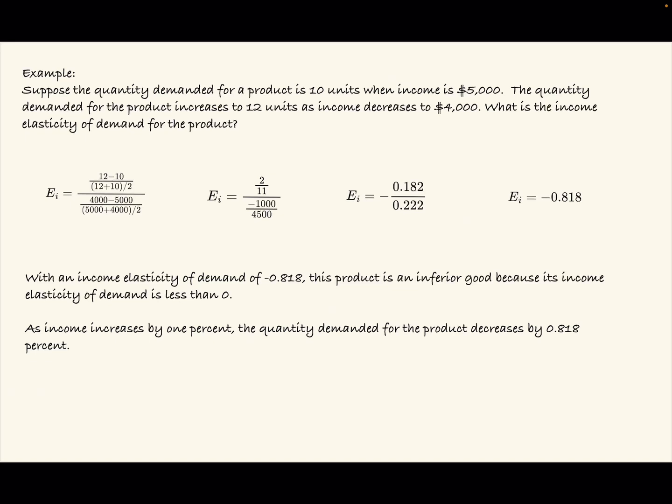After dividing this fraction, we have that EI, or income elasticity of demand, equals negative 0.818. With an income elasticity of demand of negative 0.818, this product is an inferior good because its income elasticity of demand is less than zero. This means that as income increases by 1%, the quantity demanded for the product decreases by 0.818%.